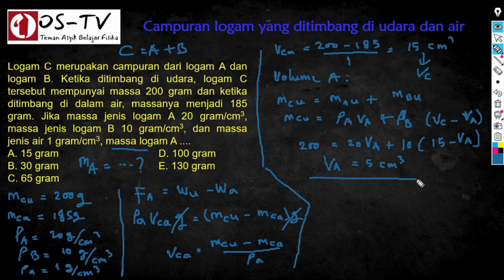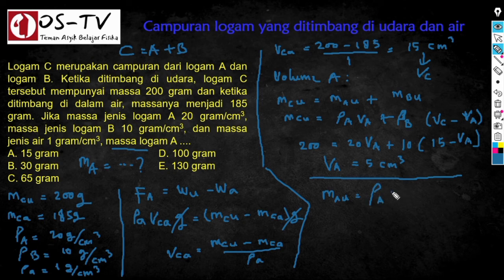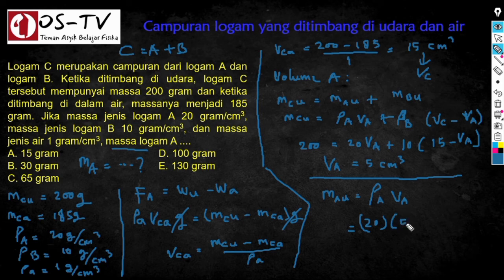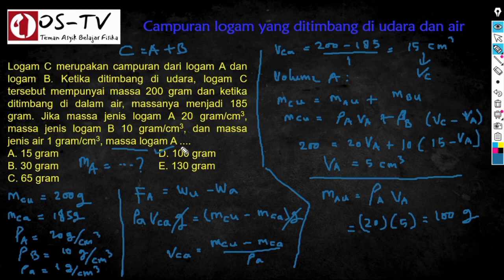Dari volume benda A, massa logam A dapat ditentukan: MA = ρA × VA = 20 g/cm³ × 5 cm³ = 100 gram. Jawaban dari soal ini adalah D. Demikianlah pembahasan tentang tips dan trik menyelesaikan soal fisika tentang Hukum Archimedes. Semoga dapat dipahami. Salam sukses dari Om Sun.